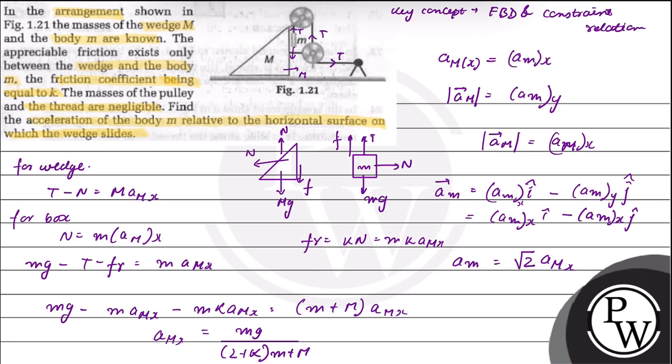So acceleration of A capital M_x is equal to mg upon (2 plus K) small m plus M. Hope you understood it well. Best of luck.